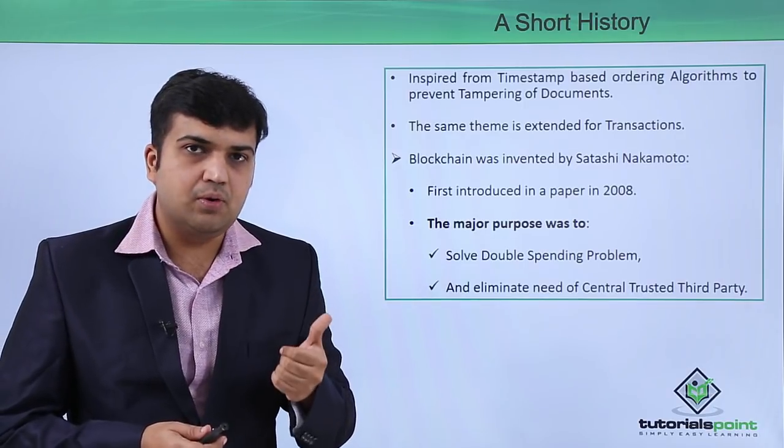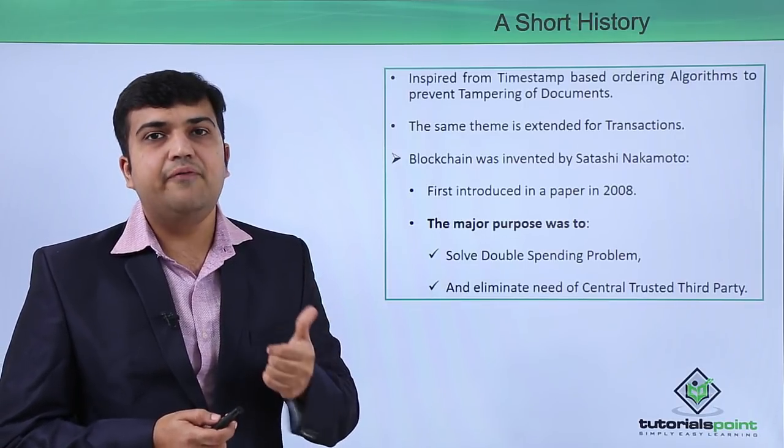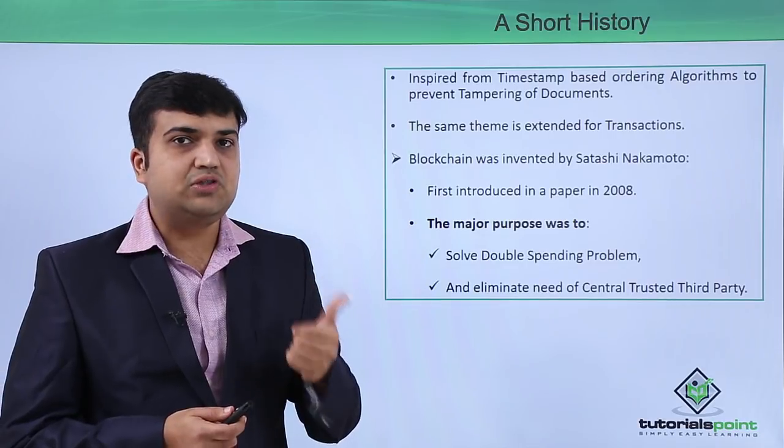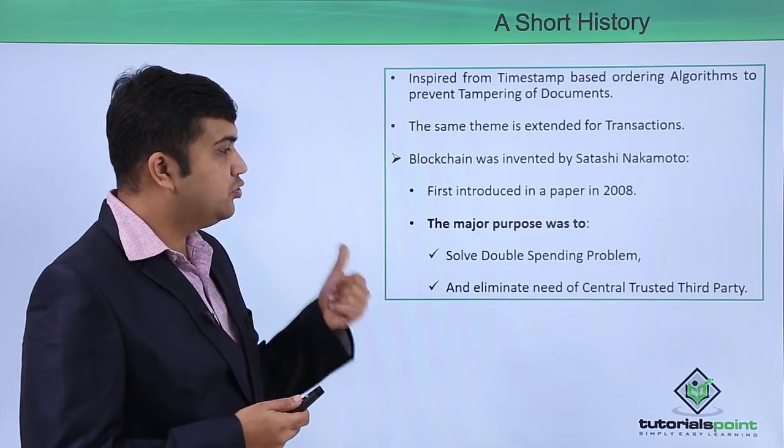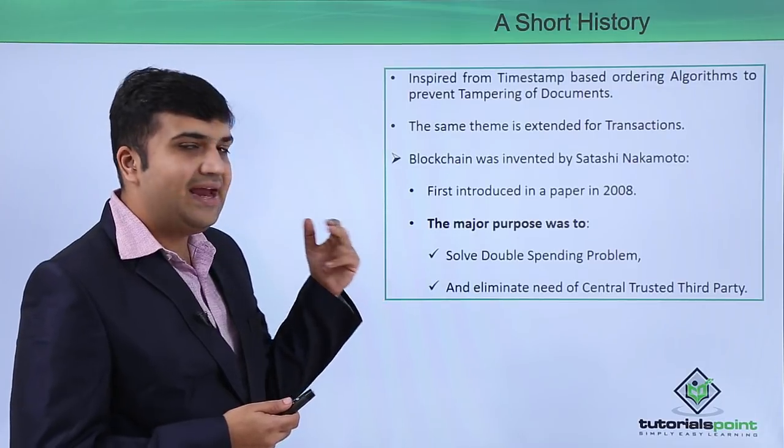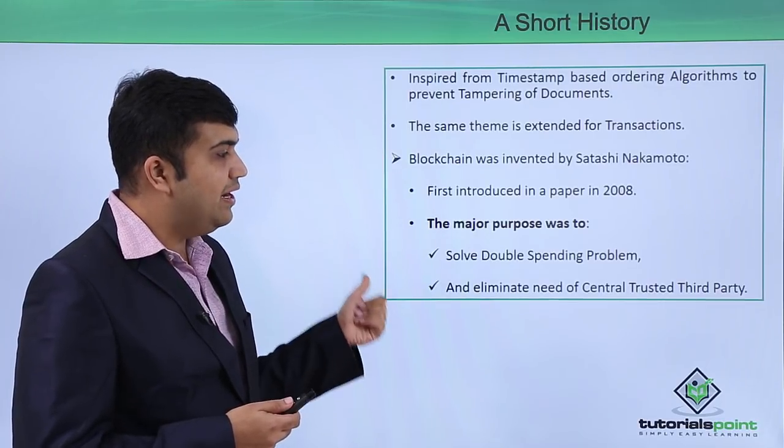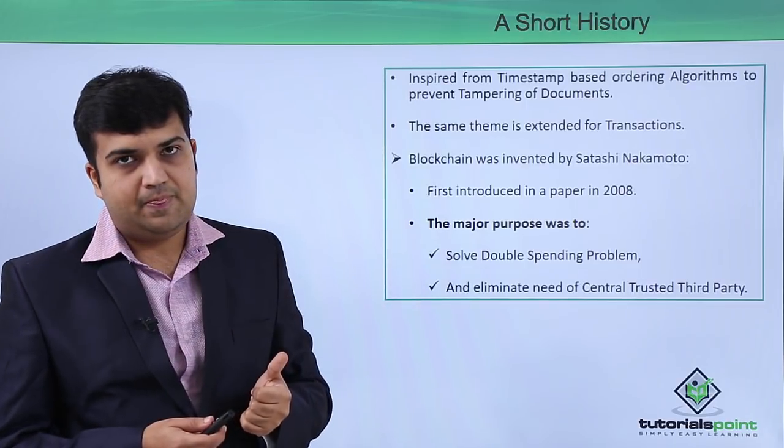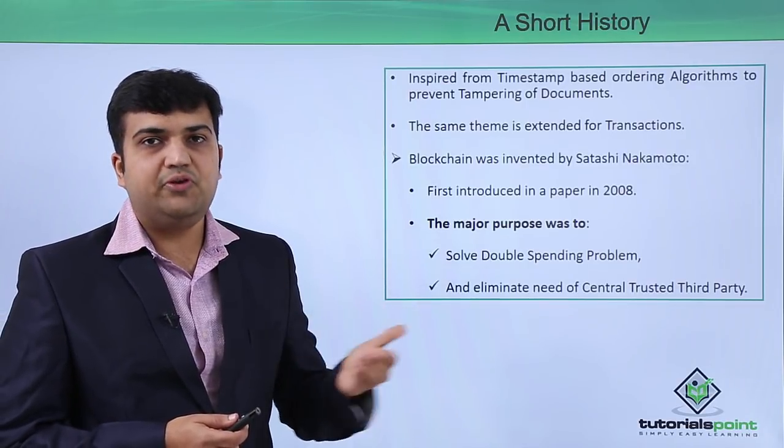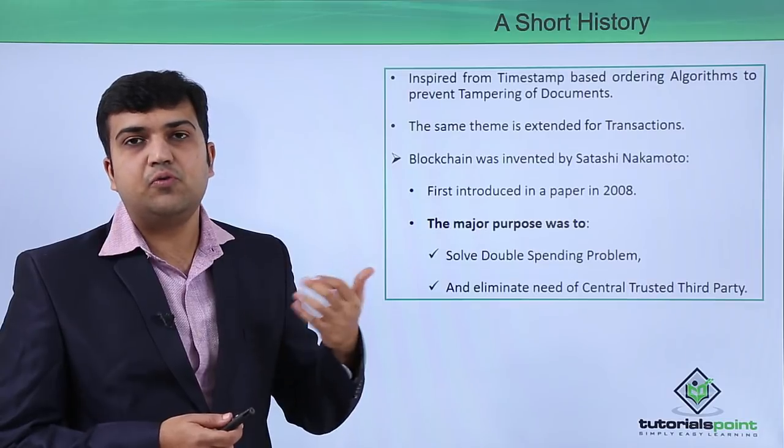The major design goal and purpose of blockchain was to solve two major problems. The first is to solve the double spending problem, and the second is to eliminate the need for a central trusted third party. Let's go through both of them and understand what those problems were.